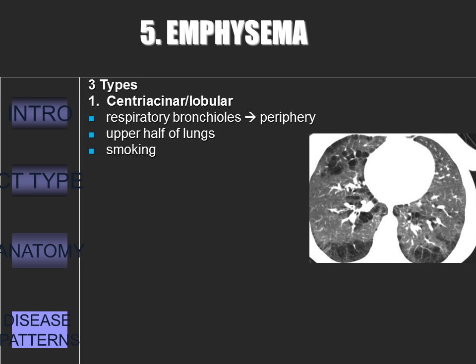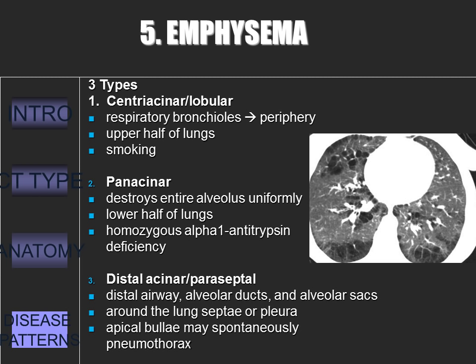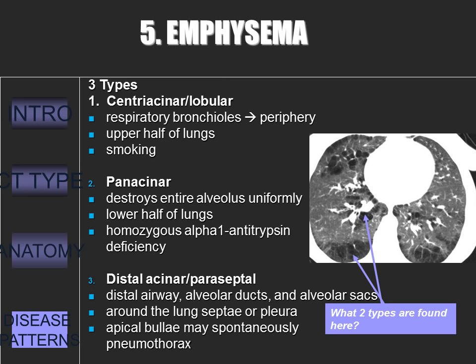There are three types of emphysema. The first is centriacinar or lobular, which begins in the respiratory bronchioles and spreads peripherally — it is associated with long-standing cigarette smoking and found predominantly in the upper half of the lungs. The second type is panacinar, where the entire alveolus is destroyed, predominant in the lower half of the lungs and associated with homozygous alpha-1 antitrypsin deficiency. The third type is distal acinar or paraseptal, which involves the distal airway, alveolar ducts, and alveolar sacs, localized around the lung septae or pleura — apical bullae may spontaneously rupture, causing a pneumothorax.